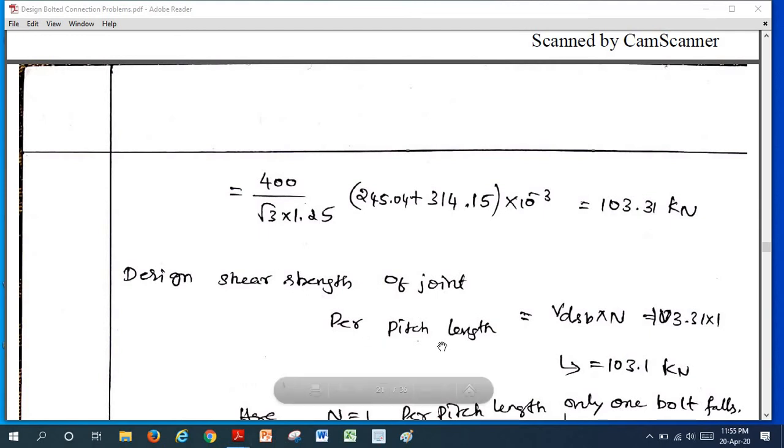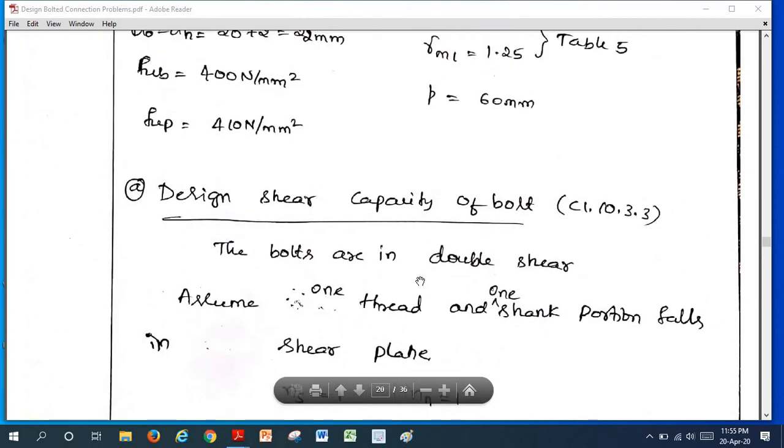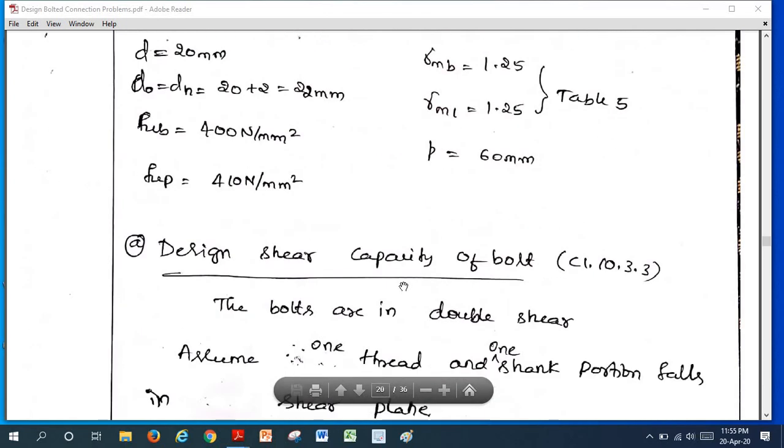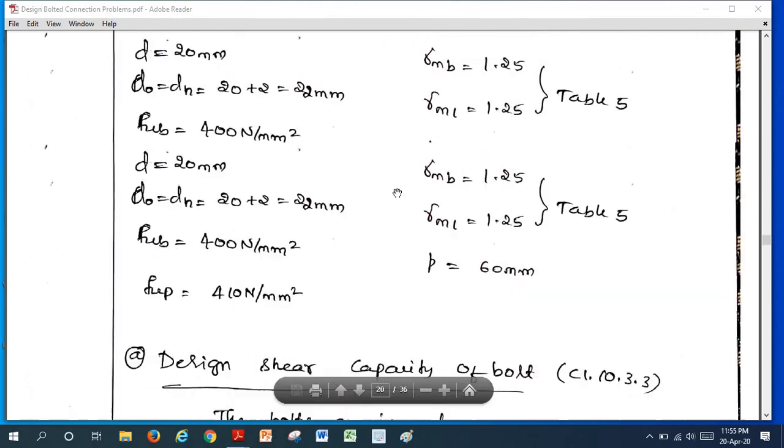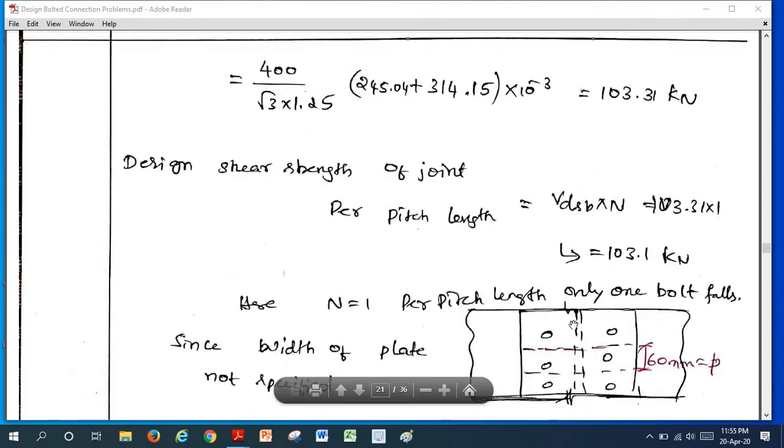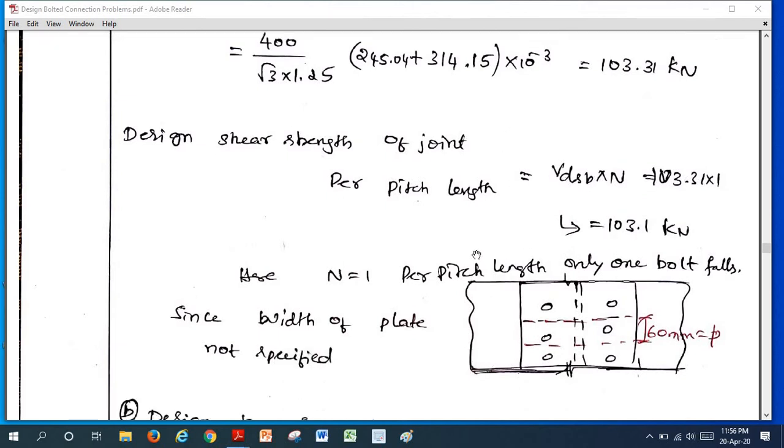Design shear strength of the joint per pitch length. Since they are not given the width of the plate here, we should calculate everything for pitch length. Pitch is 60 millimeter. If we consider this joint and consider a pitch length, we should take only half of the portion of the joint. Therefore, per pitch length, only one bolt will fall. Therefore, n becomes 1. If we multiply VDSP, that is single bolt with 1, we get 103 kilonewton is the design shear strength of the joint per pitch length.